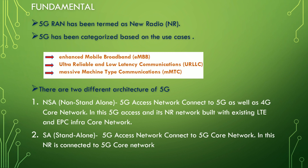5G has been categorized based on use cases, meaning there are different types of requirements for different 5G users. It is categorized as eMBB, that is Enhanced Mobile Broadband, which basically deals with increased data rate, high user density, and very high traffic capacity, with high mobility and improved data rate.